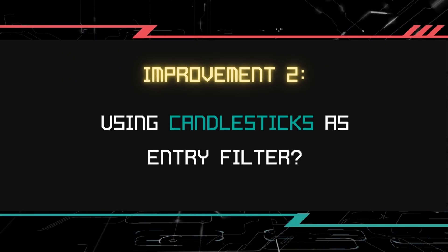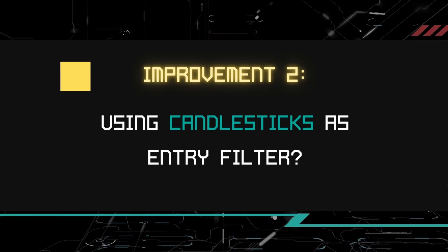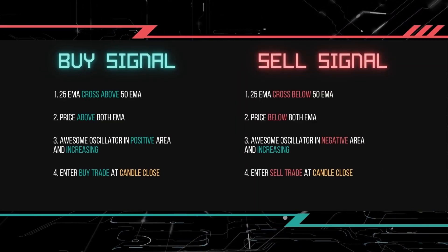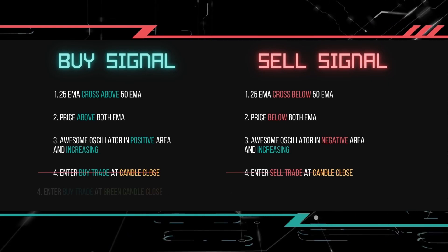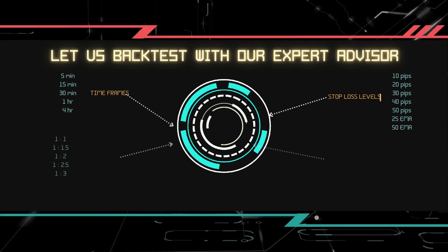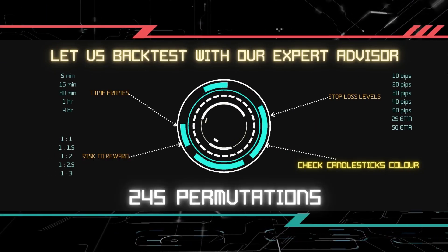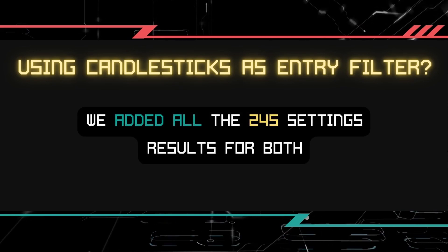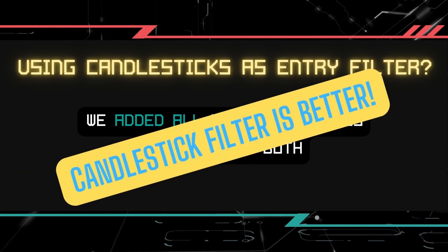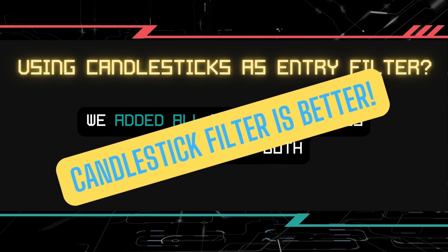Next, we want to answer if we can improve the result by using candlesticks as an entry filter. Which means, after the EMA has crossed over and the awesome oscillator is in the correct zone, we want to look for a green candle for a buy signal and a red candle for a sell signal. We have included this requirement into the expert advisor to test it out. To keep the comparison simple, we added the results of all 245 trade settings to have an overview, and yes indeed, the overall result is better compared to the previous.